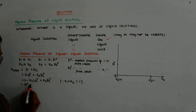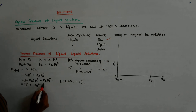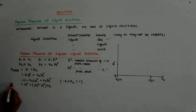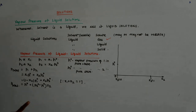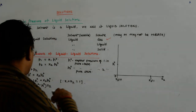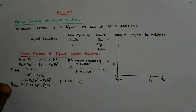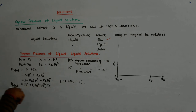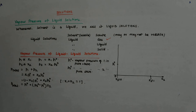P_total = P1° + (P2° − P1°)·x2. Since there is a linear correlation between x2 and P_total, this has to be a straight line.